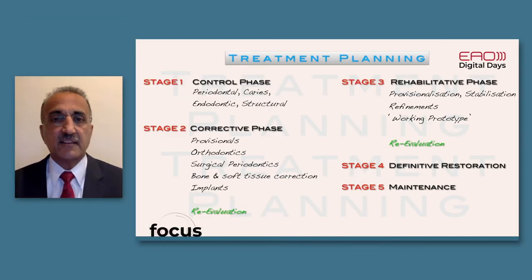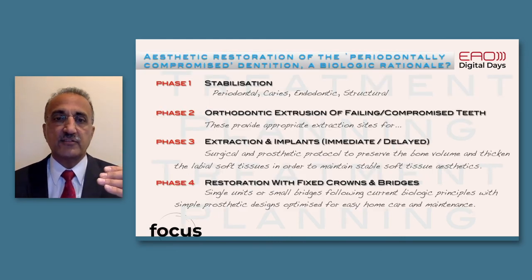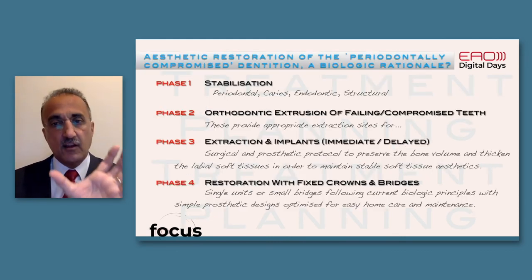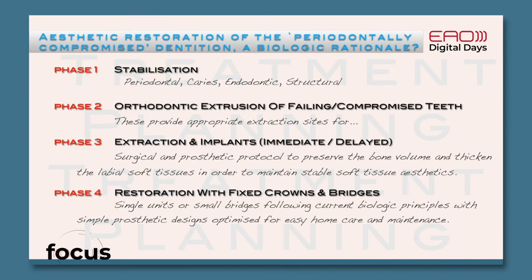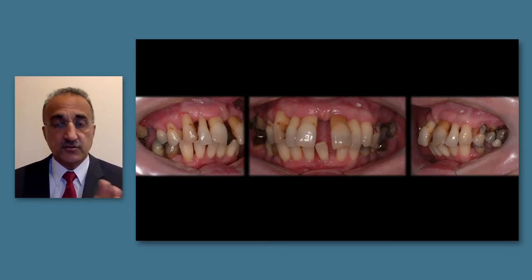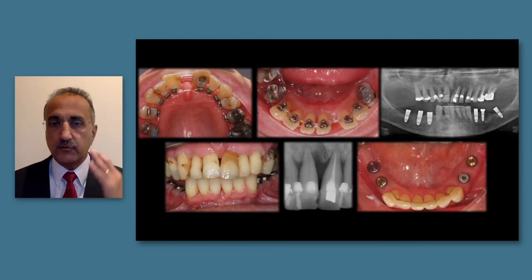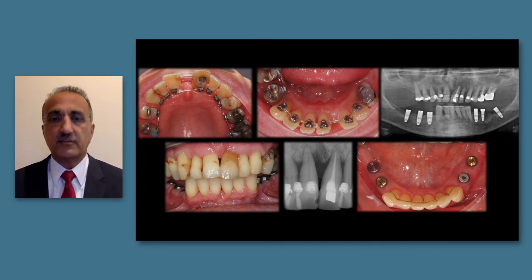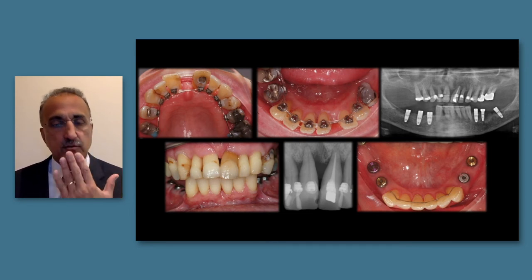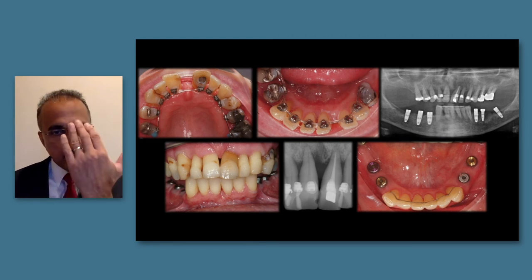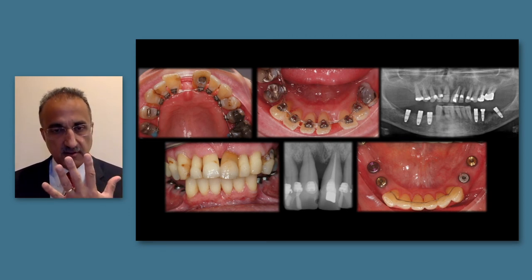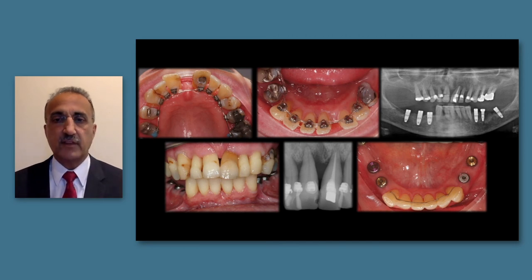We apply a strategic, systematic approach to treatment planning. The concept is to stabilize the disease, extrude the failing teeth providing sites for immediate implant placement, and then restore the patient with fixed crowns and bridges. After initial therapy, we use orthodontic treatment - in this case lingual, though I would recommend labial brackets as the vector of extrusion is difficult to control with lingual appliances. We bring bone and soft tissue down and close the diastemas, bringing teeth back to their correct positions so extraction sites are in the correct location.